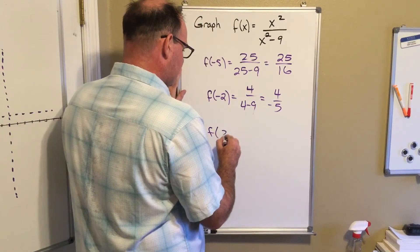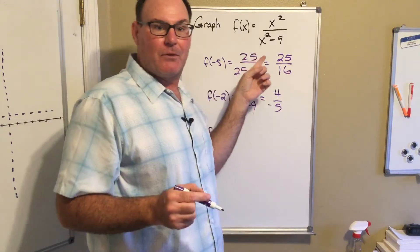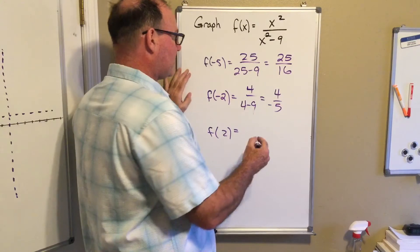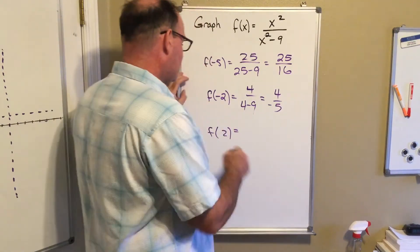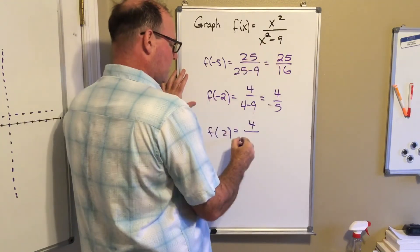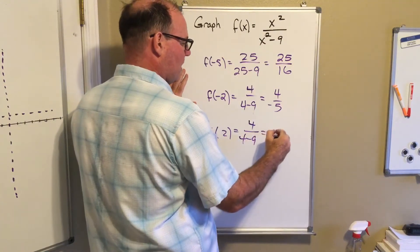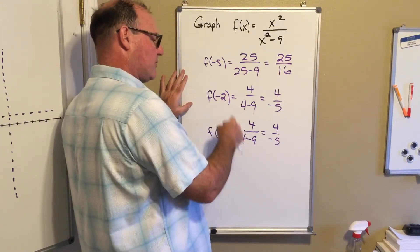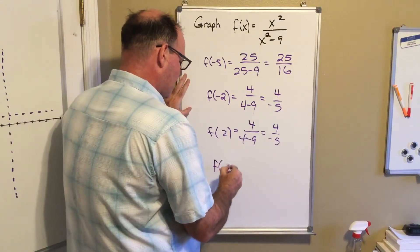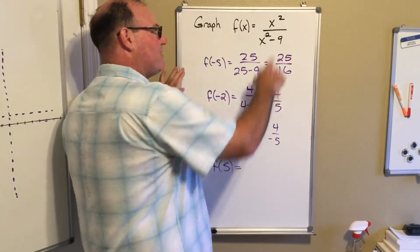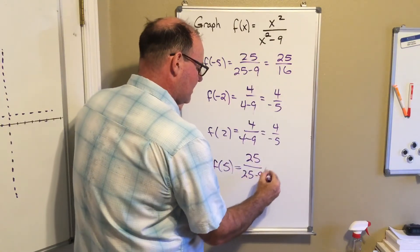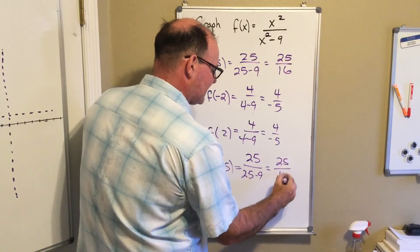Now some of you may have noticed that this is an even function because I've just got x squareds, so you might be a little ahead of the curve - pun intended. Two squared is four, two squared is four minus nine, so four over negative five. Notice we get the same value regardless if we go in the negative direction or positive direction. When I plug in five, five squared is 25 over 25 minus nine, so that's 25 over 16 or one and nine sixteenths.